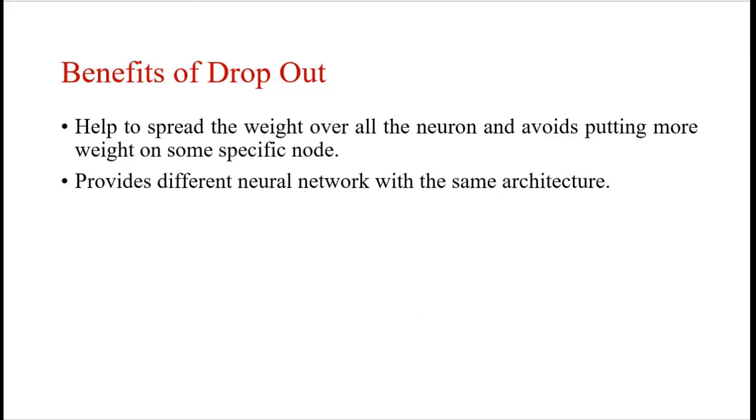The benefits are we will spread the weights over all the neurons in the neural network. Generally, neural networks tend to put more and more weight on some important neurons, and these neurons are only able to identify the correct class. These neurons are playing an important role in predicting certain things as output correctly. So in order to avoid this, we can use dropout. Dropout avoids putting more weight on specific neurons.